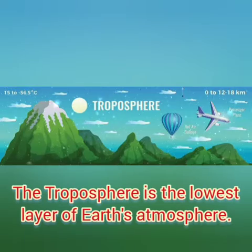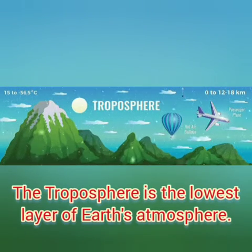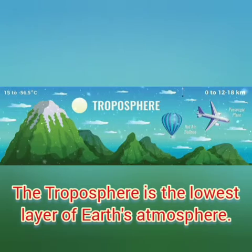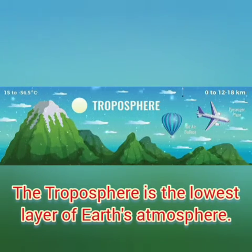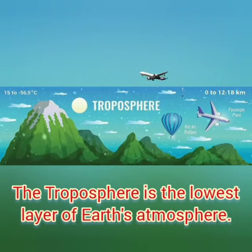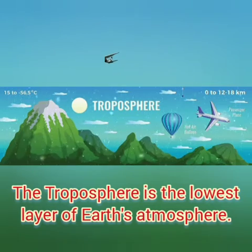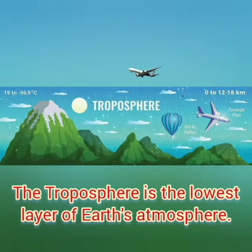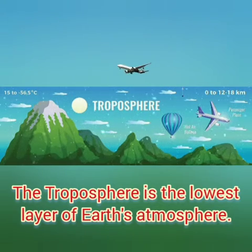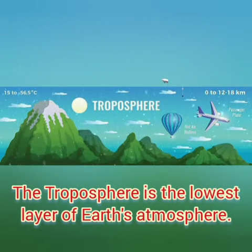First, the Troposphere. The Troposphere is the lowest layer of the atmosphere and varies in thickness from the equator to the poles. The air which is closer to the ground is denser and gets thinner with increasing altitude. The temperature in this layer decreases at a rate of 1 degree Celsius for every 165 meters of ascent. This is known as the normal lapse rate.